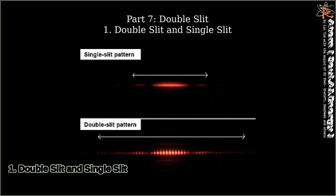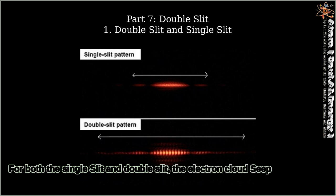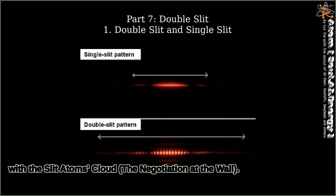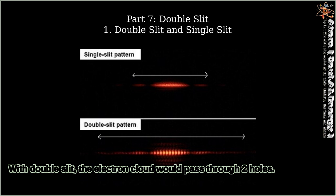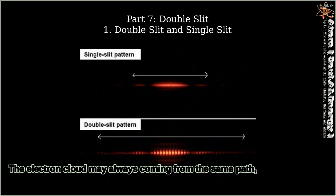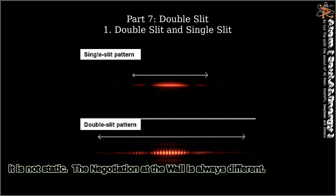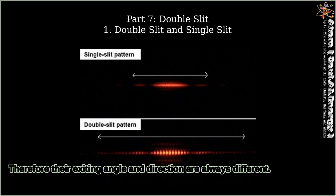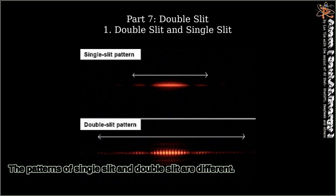Part 7: Double Slit. 1. Double Slit and Single Slit. For both the single slit and double slit, the electron clouds seep with the slit atoms cloud—the negotiation at the wall. With double slit, the electron cloud would pass through two holes. The electron cloud may always come from the same path. It is not static. The negotiation at the wall is always different. Therefore, their exiting angle and direction are always different. The patterns of single slit and double slit are different.